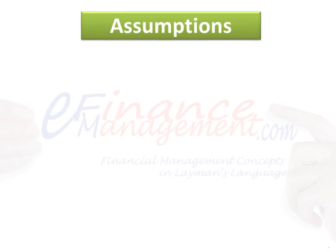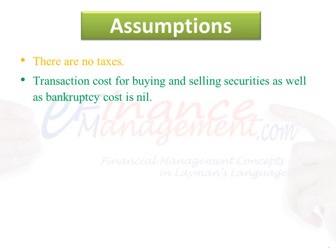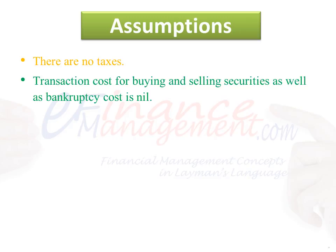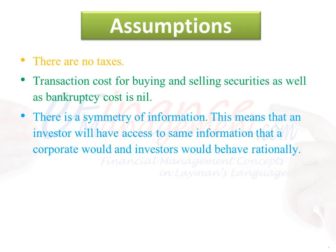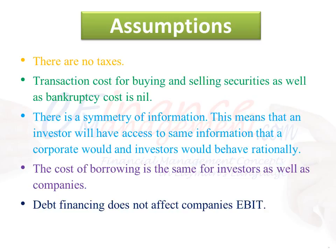Assumptions of the Modigliani and Miller Approach: There are no taxes. Transaction cost for buying and selling securities, as well as bankruptcy cost, is nil. There is a symmetry of information — this means that an investor will have access to the same information that a corporation would, and investors would behave rationally. The cost of borrowing is the same for investors as well as companies. Debt financing does not affect the company's EBIT.